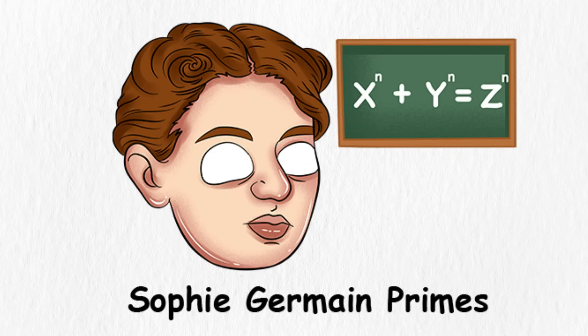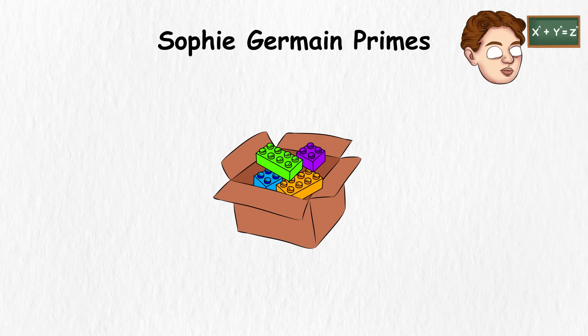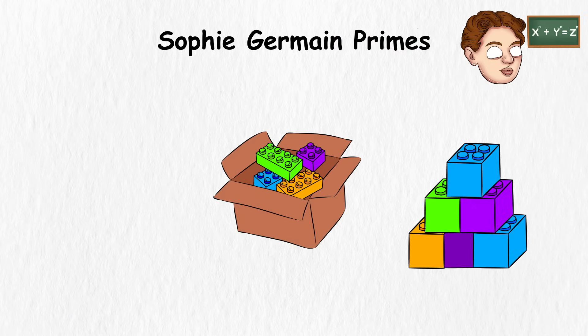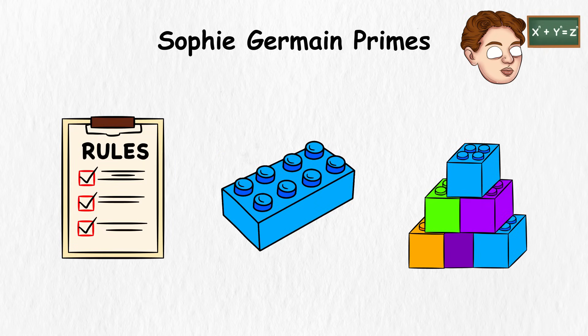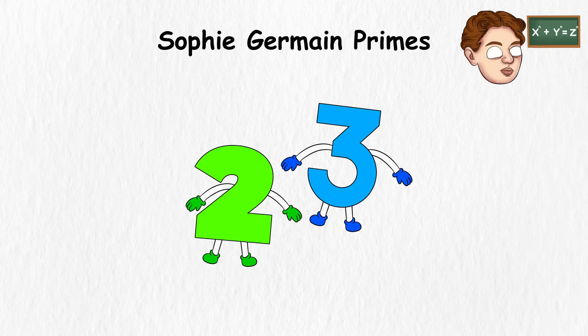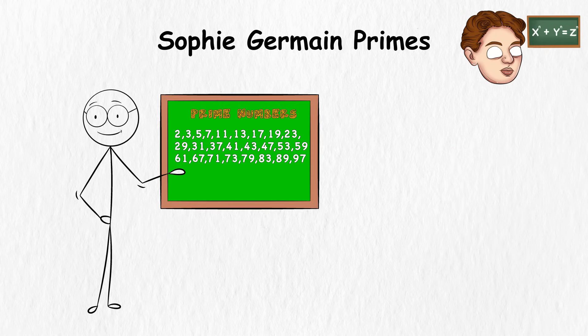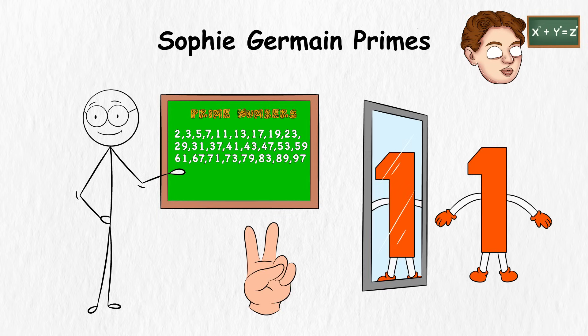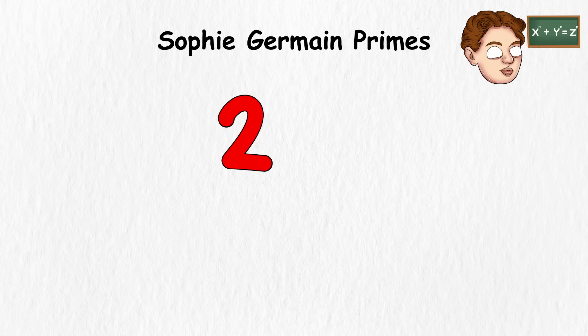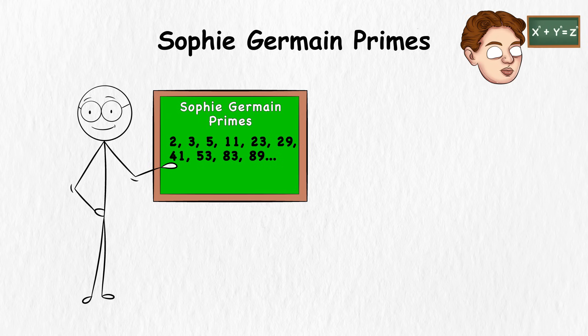Sophie Germain Primes. You have a big box of Lego bricks, and you're trying to build a really cool castle with them. Now, suppose you have a special rule for your castle. Each brick must be a prime number of bricks high. A prime number is a number that only has two factors, one and itself. For example, 2, 3, 5, and 7 are prime numbers. Sophie Germain Primes are a special kind of prime number with an extra twist.